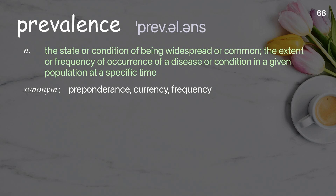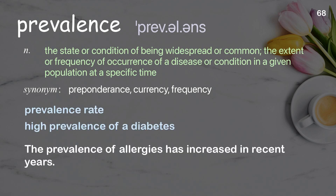Prevalence. The state or condition of being widespread or common; the extent or frequency of occurrence of a disease or condition in a given population at a specific time. The prevalence of allergies has increased in recent years.